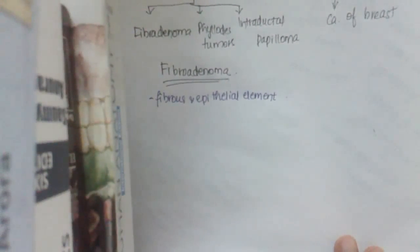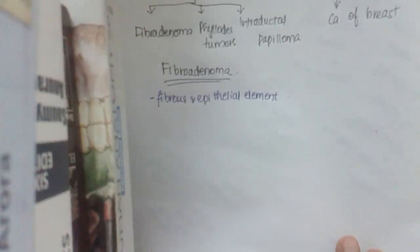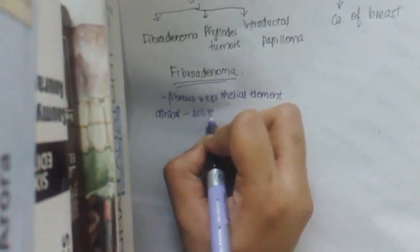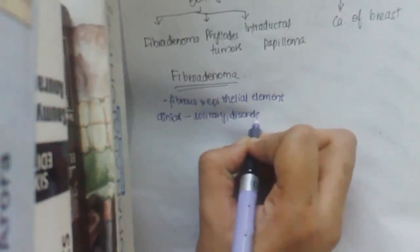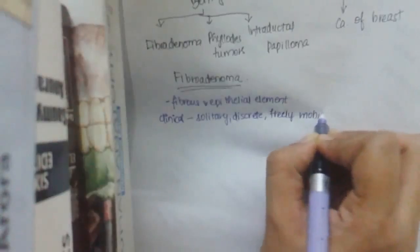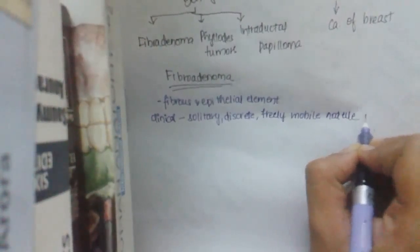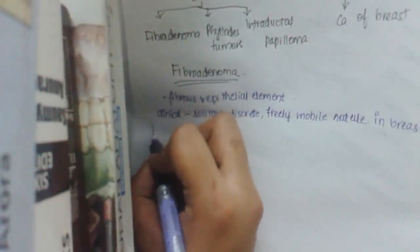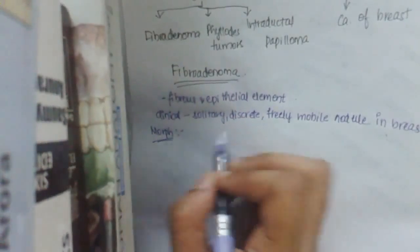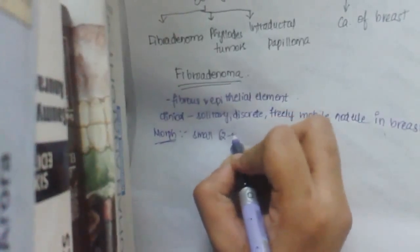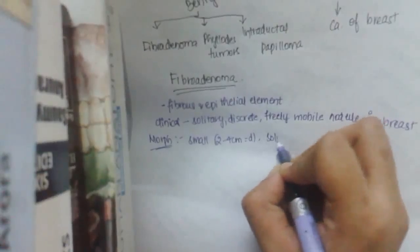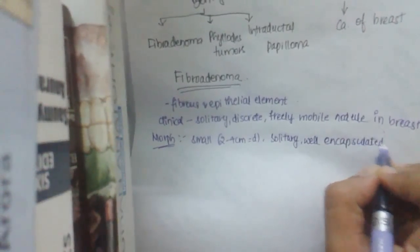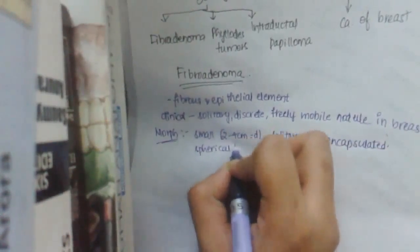Fibroadenoma is the most common benign tumor of the breast. Though it can occur at any age, it is most common between 15 to 30 years of age. Clinically, a patient presents with a solitary, discrete, freely mobile nodule in the breast. Morphologically, it is small — approximately 2 to 4 centimeters in diameter — solitary, and well encapsulated.